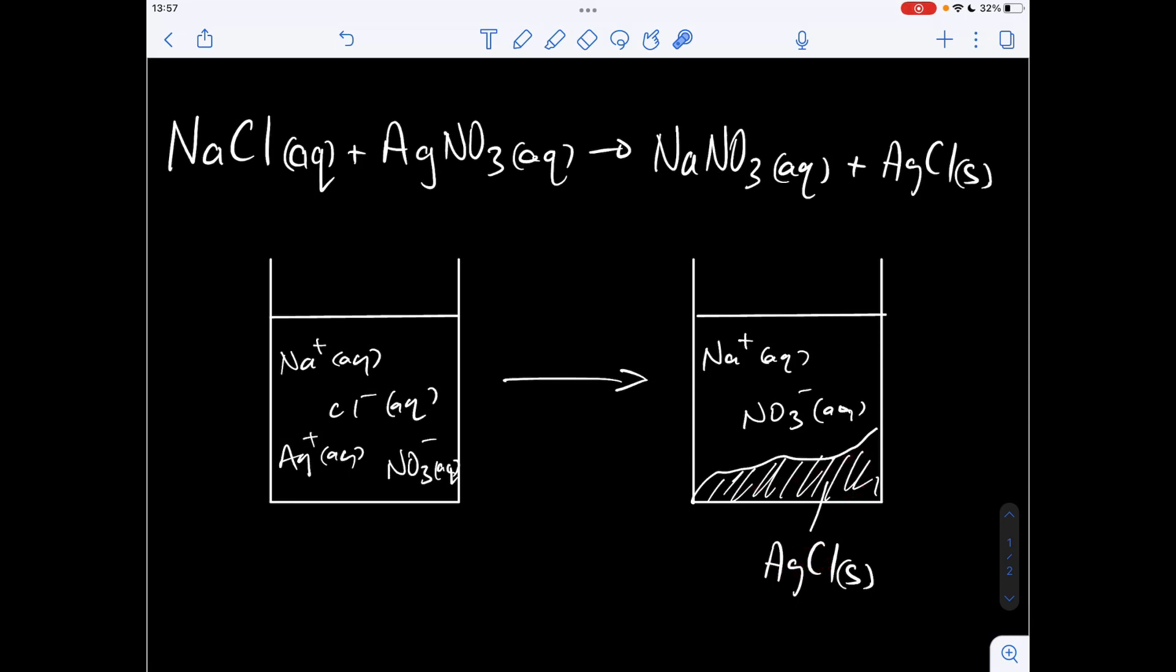So basically all the ionic equation does is reflect what's changed. So you can see at the start we have got aqueous sodium ions and we've also got them at the end. They haven't changed and so we can basically ignore them. So I'm going to cancel those out. What else hasn't changed? Those aqueous nitrate ions. So my ionic equation is going to be this aqueous silver ion plus the aqueous chloride ion reacting to form solid silver chloride.